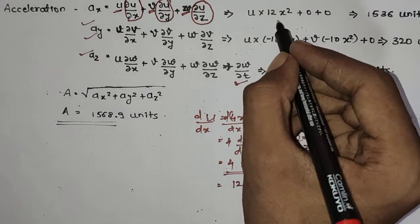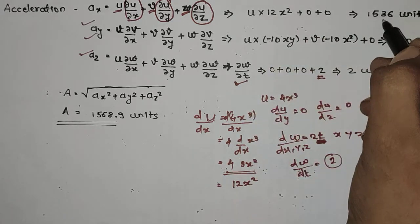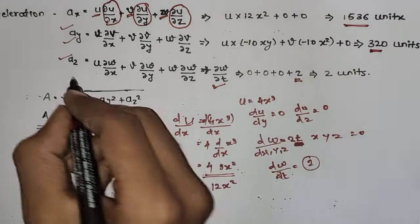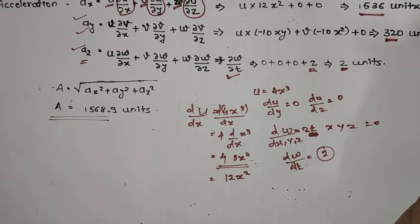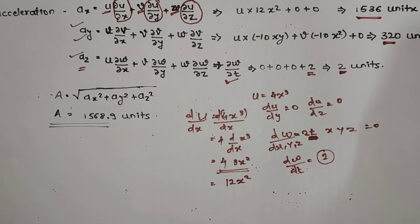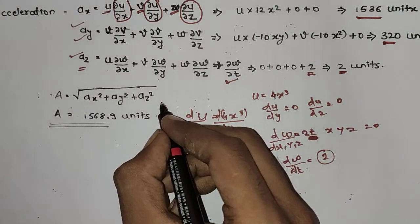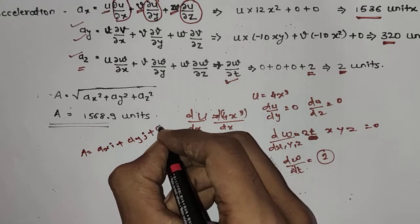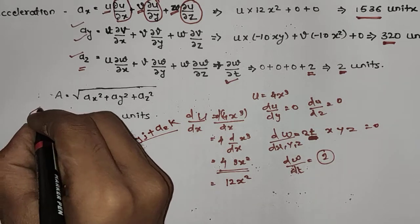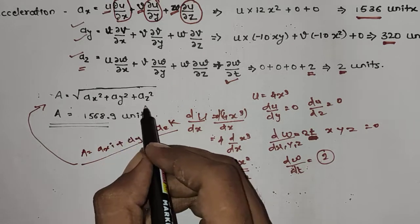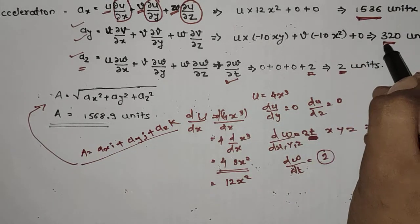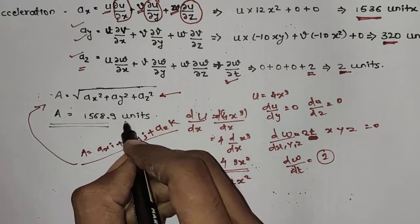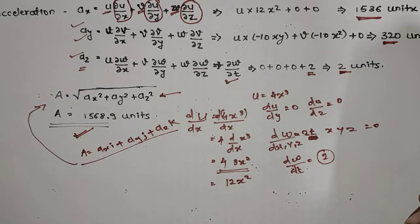After substituting all values, we get ax = 1536 units, ay = 320 units, and az = 2 units. The acceleration in vector form is a = 1536i + 320j + 2k. The magnitude is a = √(ax² + ay² + az²) = 1568.9 units. This is how we calculate the magnitude of acceleration of the particle.